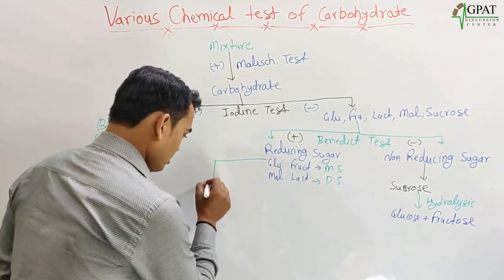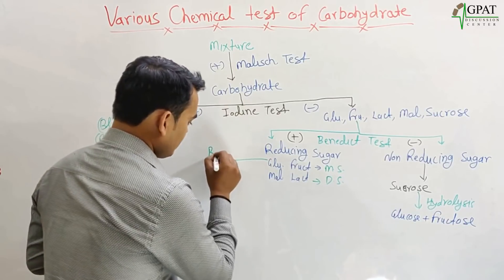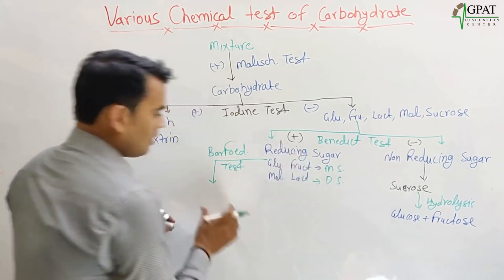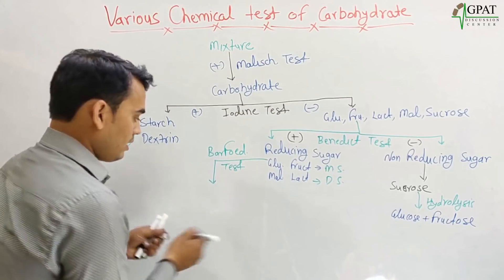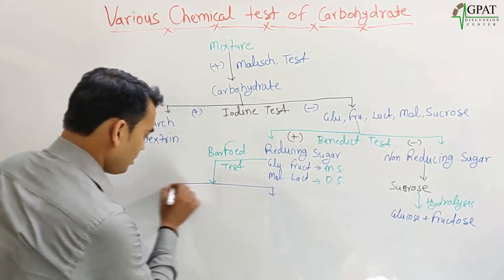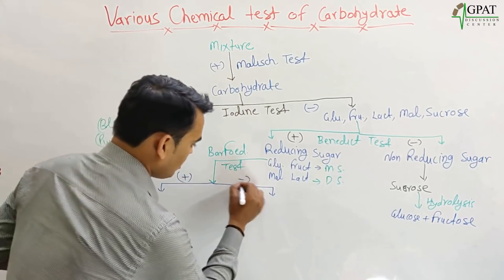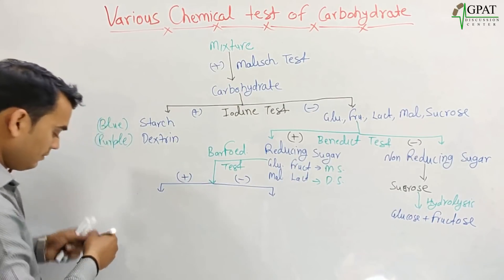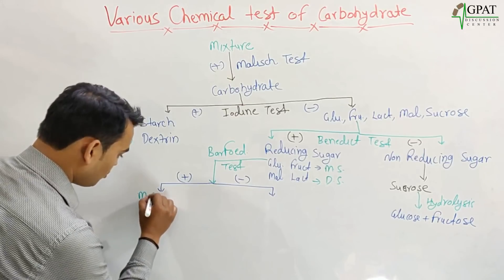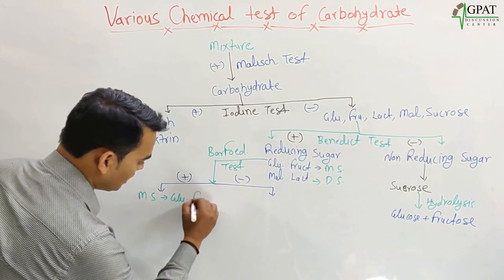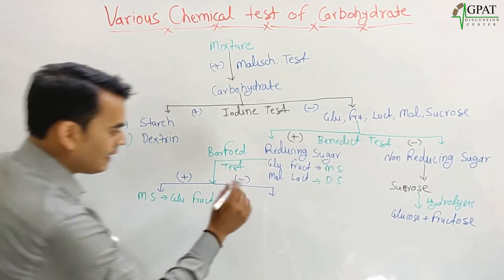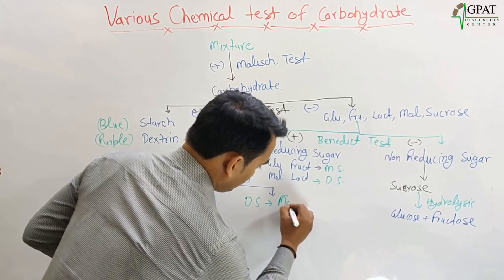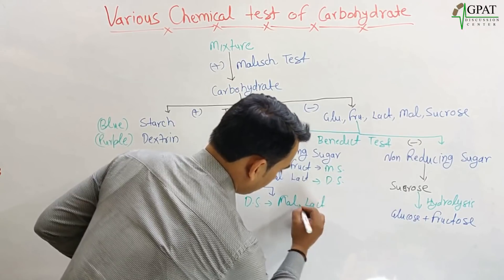On the reducing sugars, we apply the Barfoed test. There are two scenarios: either positive or negative. If the Barfoed test comes positive, then it will be a monosaccharide — for example, glucose and fructose. If negative, then it will be a disaccharide — that is, maltose and lactose.